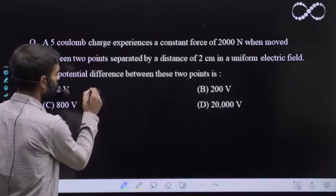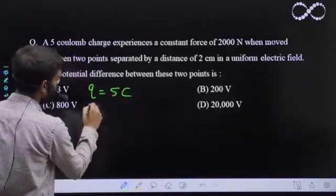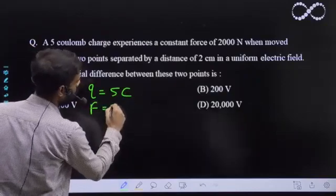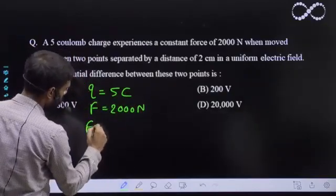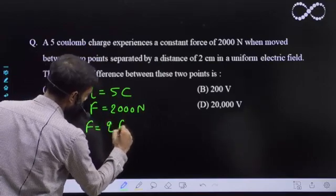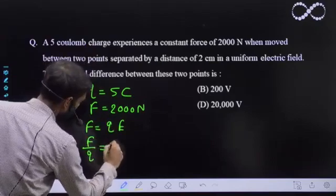Let's see. In this question q is equal to 5 coulomb, and force is equal to 2000 newton. So from here I can say F is equal to q into E. So from here, F upon q is equal to E.